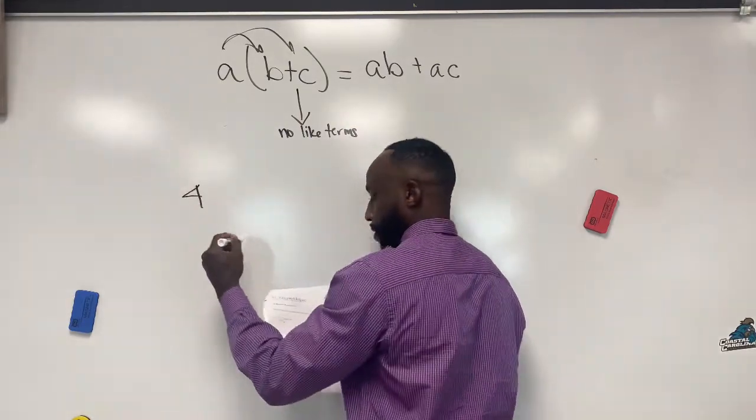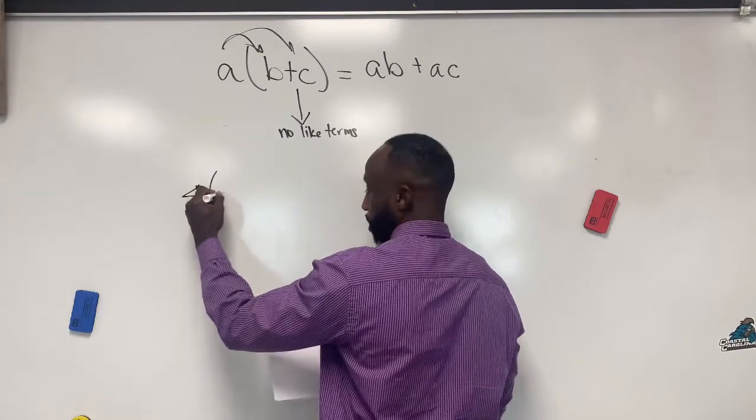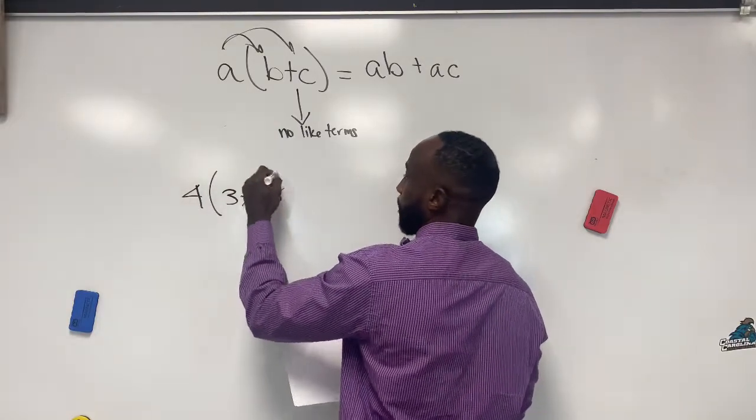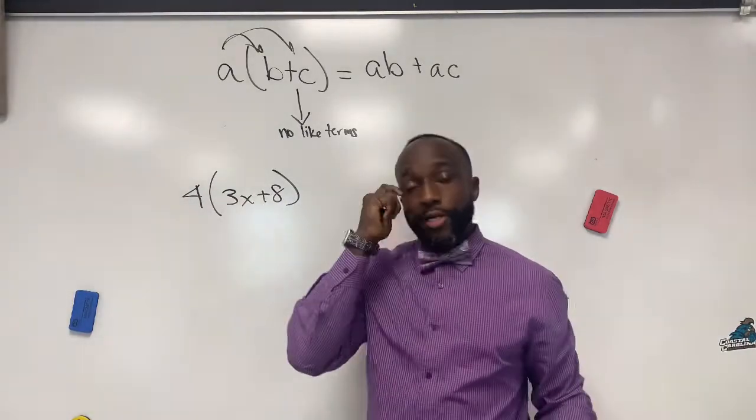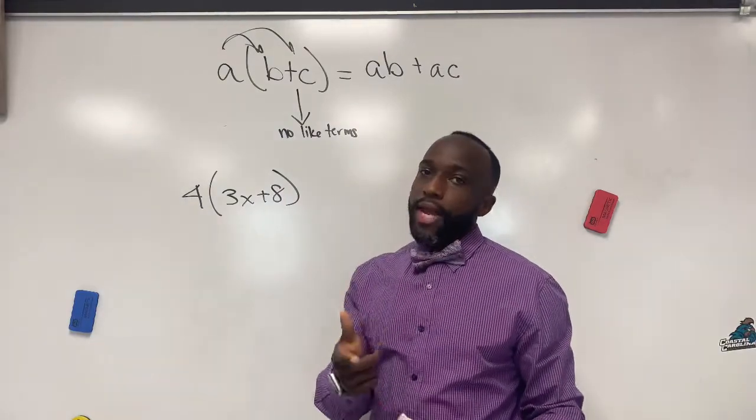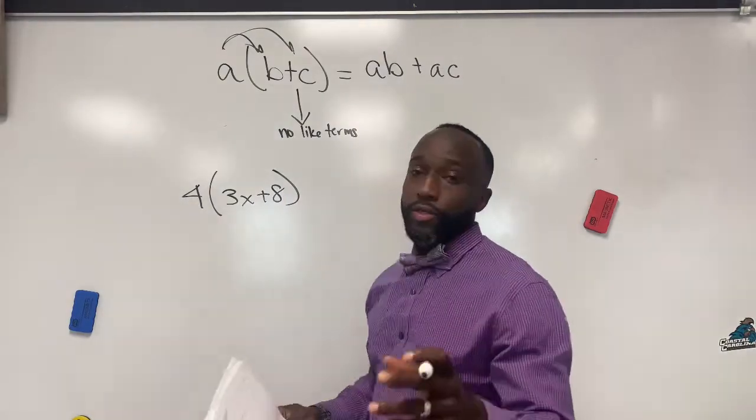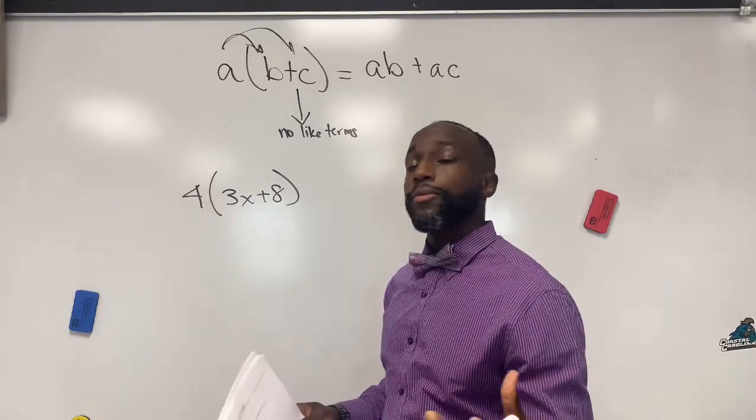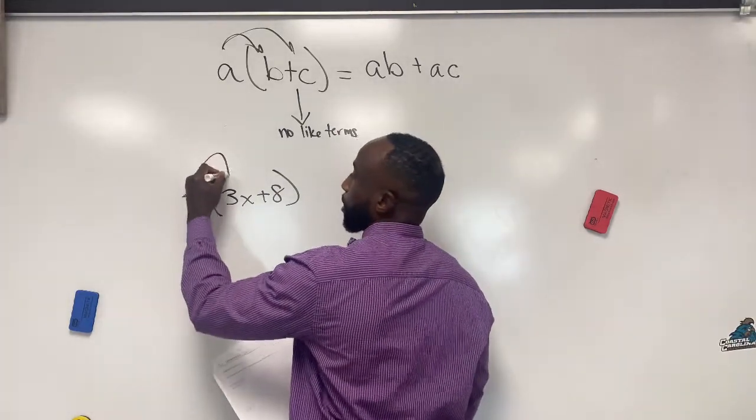Number one says four times the quantity of three x plus eight. Now, rule of thumb that I would like for you to do or something I would like for you to do when you're simplifying using the distributive property is to draw your arrows.